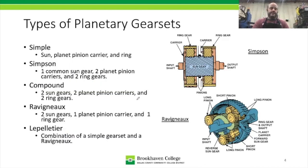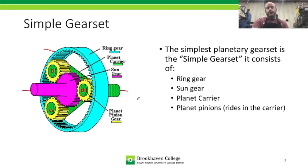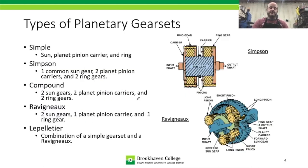There are many different types of planetary gear sets, but the five most common are the ones we'll cover here. The first is the simple gear set — it has one sun gear, one carrier, and one ring gear. The carrier has pinions, which could be two, three, four, or five — any number, as long as they all mesh with the ring gear and the sun gear at the same time.